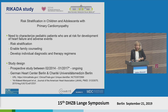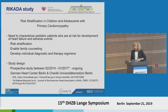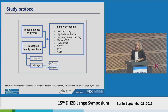I want to present our results on the RICADA study, carried out over the last five years, which we are very happy to have published in the Journal of the American Heart Association very recently. RICADA stands for Risk Stratification in Children and Adolescents with Primary Cardiomyopathy. We do this to characterize pediatric patients for risk evaluation, enable family counseling, and develop individual diagnostic and new therapy regimes. This was carried out at the German Heart Center Berlin, with patients from the Charité as well.